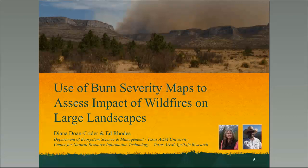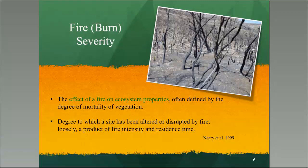Let's go ahead and define burn severity. That can be confused sometimes with fire intensity. Fire intensity is the amount of energy or heat released per unit time — we're not going to be addressing that today. Burn severity is the effect of a fire on ecosystem properties, or more towards the site of vegetation and soils. It's also a good index for determining how that ecosystem has been altered or disrupted by fire, and that's what these maps address.